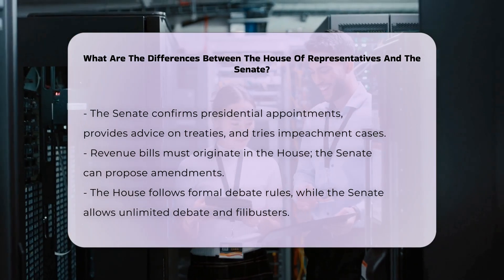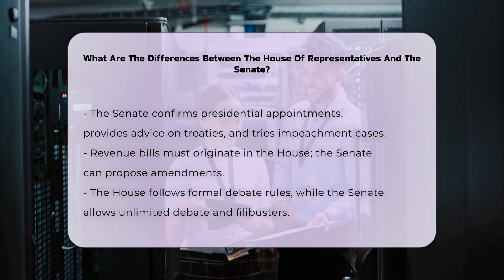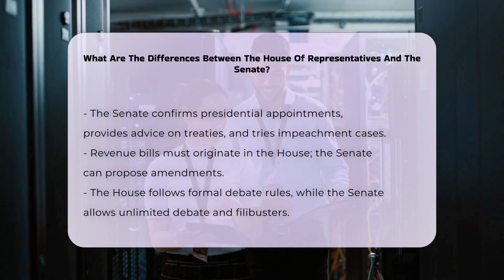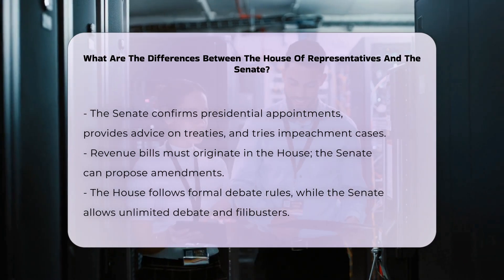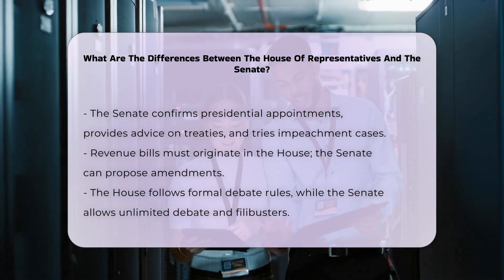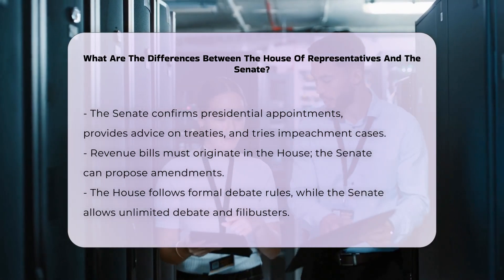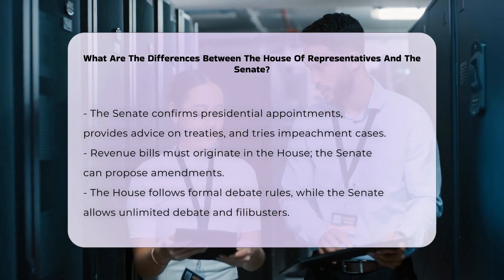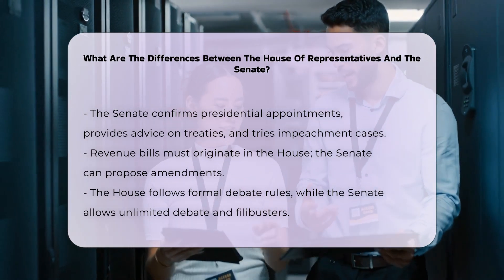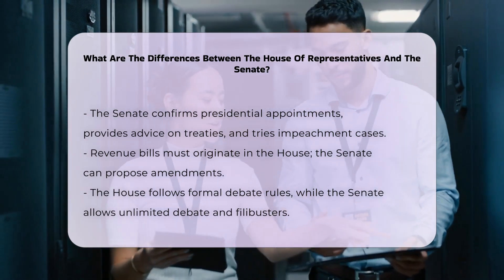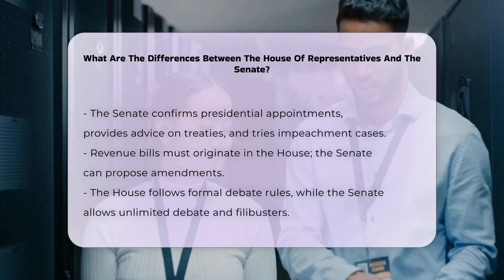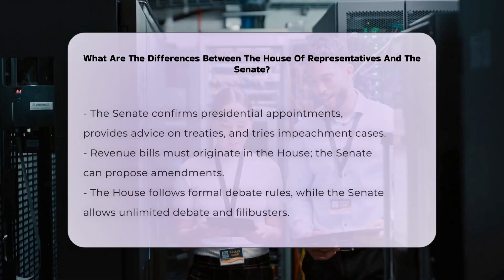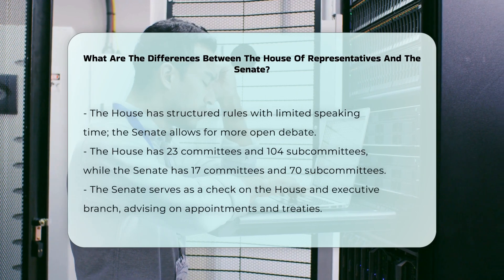Rules and procedures. The House has more formal rules and a structured debate process, limiting the time members can speak and the number of amendments that can be introduced. In the Senate, any amendment can be introduced, and senators can use filibusters to delay votes. A supermajority of 60 senators is required to break a filibuster.